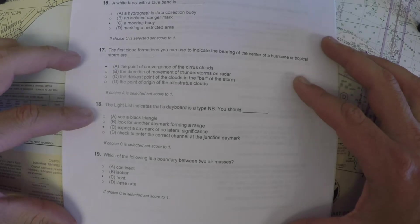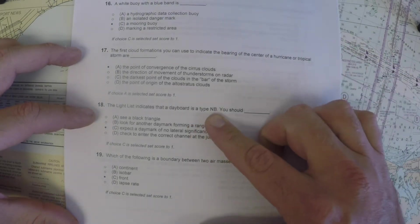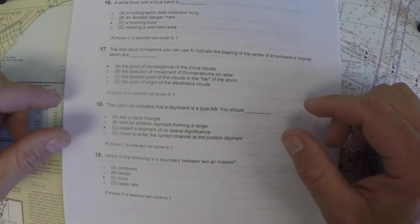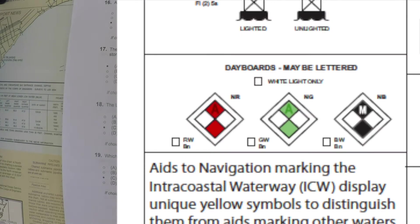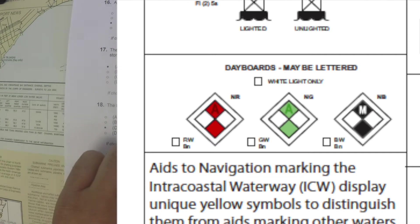The next question on here is, the light list indicates that a day board is of type November Bravo. What should you do? Well, in the light list, they show you this image of these day boards that have no lateral significance. One of them is type November Bravo.